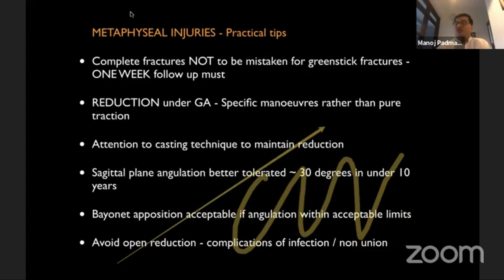Practical tips for complete fractures: do not mistake them for innocuous greenstick fractures as illustrated by the case shown. A one-week follow-up is a must — write it into your protocol as that's the time to re-manipulate if needed. Reduce under general anesthesia. Use specific maneuvers; don't do an OPD reduction. Pay attention to casting technique similar to physeal injuries. Sagittal pre-angulation is better accepted, especially in children below 10 years. Bayonet apposition is acceptable as stated. Avoid open reductions — complications of infection are serious. You hardly ever see a non-union in a distal radius fracture unless it has been opened or has become infected.